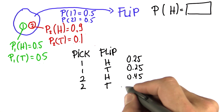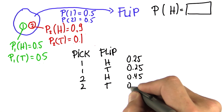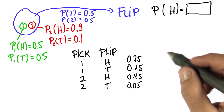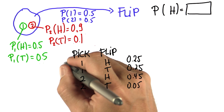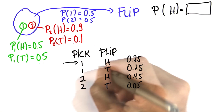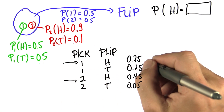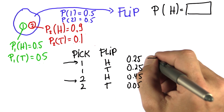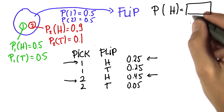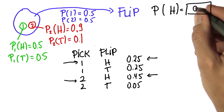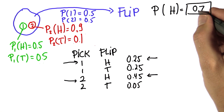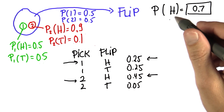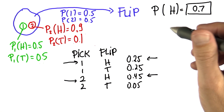For the unfair coin, the probability of tails is 0.1 multiplied by the probability of picking it, 0.5, giving 0.05. When we ask what's the probability of heads, two cases contribute, so we add 0.25 and 0.45 to get 0.7. In this example, there's a 0.7 chance of generating heads.